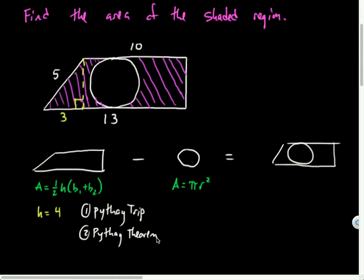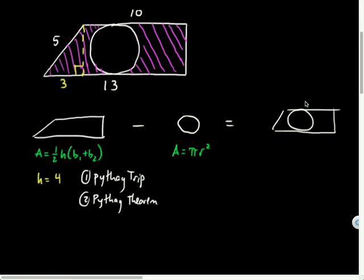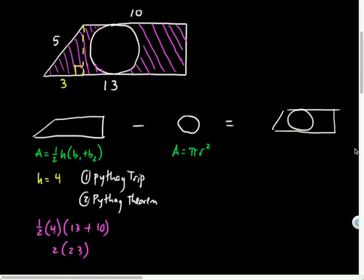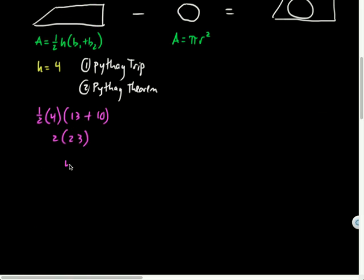So let's calculate the area of this now that I have the dimensions I need. So I'll have area is equal to half the height times the sum of the bases, 13 plus 10. So half of four is two times 23. So this area is going to be 46.